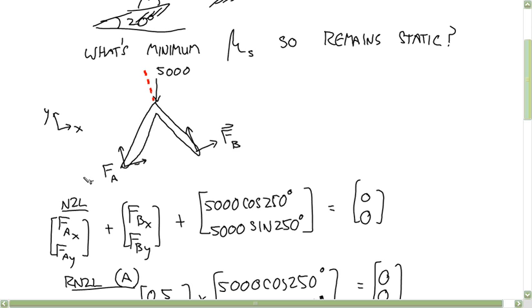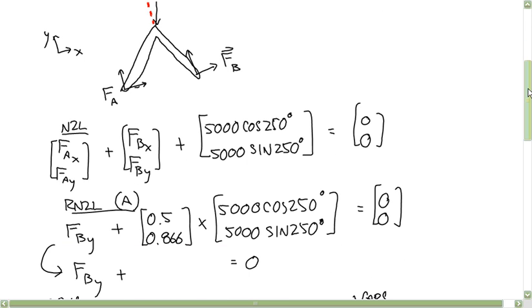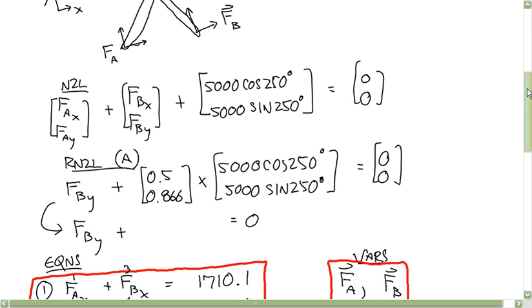But isolating the whole structure, I got three equations for four unknowns. You can't solve anything yet.